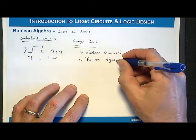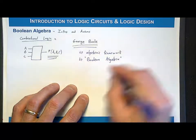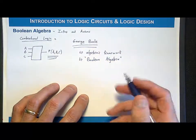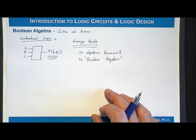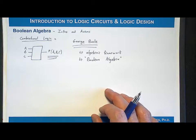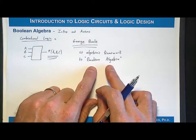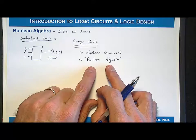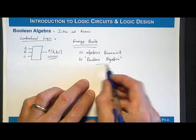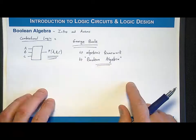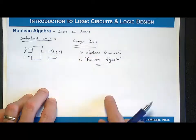Boolean algebra refers to the algebraic framework for a two-valued system. It defines all the operations, all the theorems, all the axioms, all the postulates that we use for this system. It really sets the stage for all logic design, because Boolean algebra allows us to take any arbitrary functional description of behavior, such as a truth table, and synthesize the circuitry that we can actually build and implement the logic circuit.